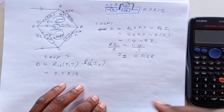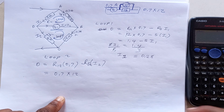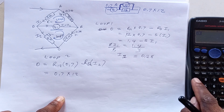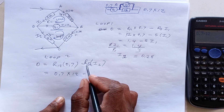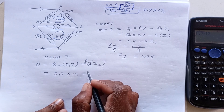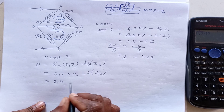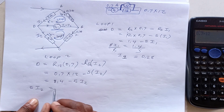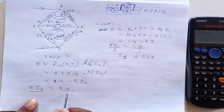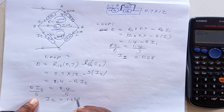I made a mistake there — I used 2 ohms instead of 12. So here we have 0.7 times 12, which equals 8.4, minus 5·I2. We take I2 to this side and say 5·I2 equals 8.4. The sign changes, so we divide both sides by 5. Therefore I2 equals 8.4 divided by 5, which equals 1.68 A.